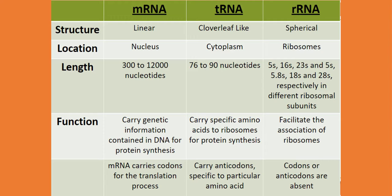In the case of mammals, mRNA is around 300 to 12,000 nucleotides long, while tRNA has approximately 76 to 90 nucleotides. For rRNA, it is a bit more. In prokaryotic and eukaryotic cells, they contain different rRNA — for example, 5S, 16S, and 23S in prokaryotes, and 5S, 5.8S, 18S, and 28S in eukaryotes, respectively in different ribosomal units.